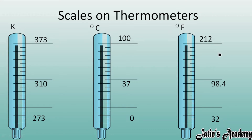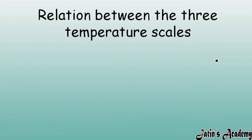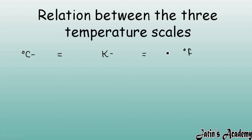The upper fixed point in degree Fahrenheit is 212°. Keeping all these scales in mind, we are going to derive the relation between the three temperature scales. First, write all three scales: degree Celsius, then Kelvin, then degree Fahrenheit. Put equals signs between them, then subtract the lower fixed point of each: 0 for Celsius, 273 for Kelvin, and 32 for Fahrenheit. Then divide by the range.